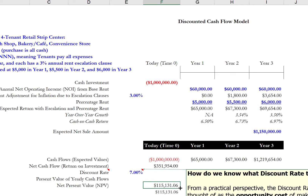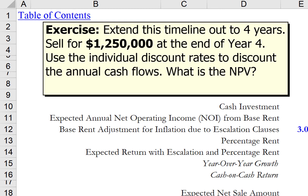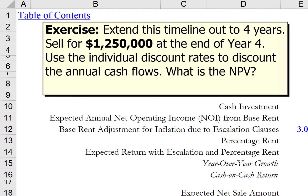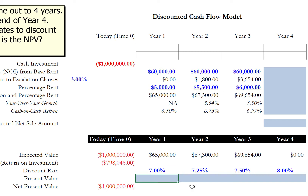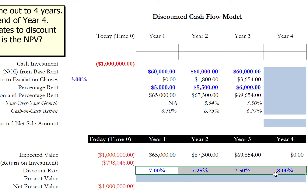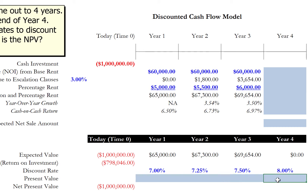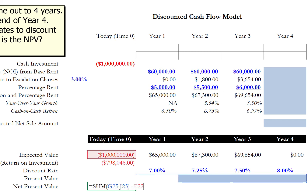Next, let's flip to the DCF Exercise tab. Your task is to extend this analysis to a four-year timeline by filling in all of the blue-shaded cells. The assumption is that the sale at the end of year four will be for $1.25 million, and that there are individual distinct discount rates for each year of the transaction. In theory, every additional year into the future that we go out, there is more risk in the cash flow, and that is what this increasing set of discount rates is reflecting. Once you solve for the present value of each year's cash flows using the appropriate discount rates, the net present value will calculate for you, and you will be able to answer the question of what is the NPV. Press pause on the video now and do the work.